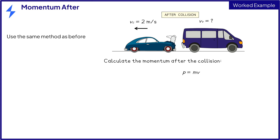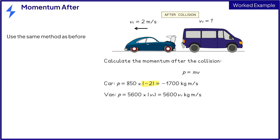Use the same method as before to calculate the momentum after the collision. For the car, this is 850 times minus 2, which is equal to minus 1,700 kilograms meters per second. It is minus 2 because the car is moving backwards to the left. For the van, this is 5,600 times the final velocity of the van. So the momentum after the collision is minus 1,700 plus 5,600 times the final velocity of the van, for one mark.